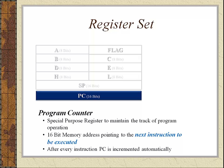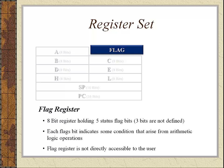Then we have the program counter. This is also a special purpose register which maintains track of the program execution. It is a 16-bit register which points to the next instruction to be executed. After every instruction, the PC is incremented automatically. Then we have the flag register. It is an 8-bit register holding five important status flags of 8085. Each flag bit indicates some condition that arises from arithmetic and logic operations. The flag register is not directly accessible to the user.